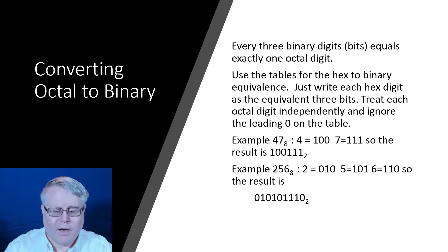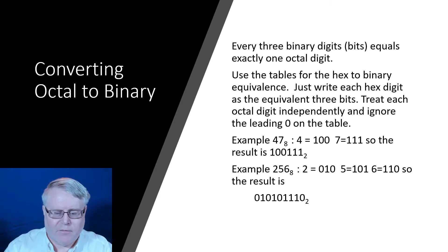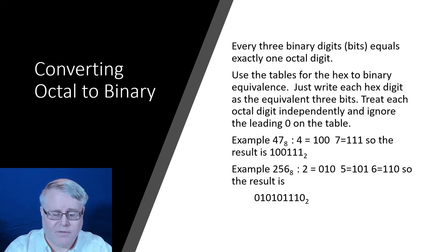Converting octal to binary uses groups of three bits per octal digit. You can use the hex-to-binary table, but ignore the leading zero since we only need the last three bits. For octal 47, look up 4 — the hex table shows 0100, but we take only 100 — and 7 gives 111, so the answer is 100 111. For 256 octal, suppress the leading zero for each digit and write out 010, 101, 110, giving the binary string 010 101 110.